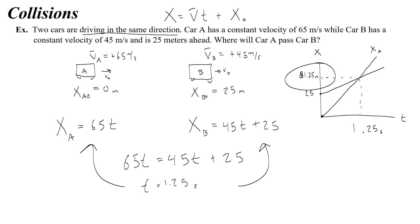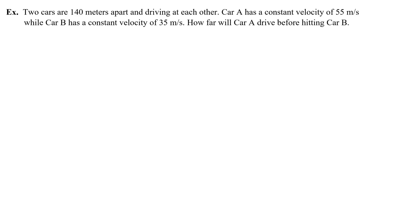Two cars are 140 meters apart driving at each other. Car A has a constant velocity of 55 meters a second, while car B has a velocity of 35 meters a second. How far will car A drive before hitting car B? Okay, so I'm just going to rough sketch this. A and B. Maybe I want to draw their velocities just so that I know they're going towards each other.